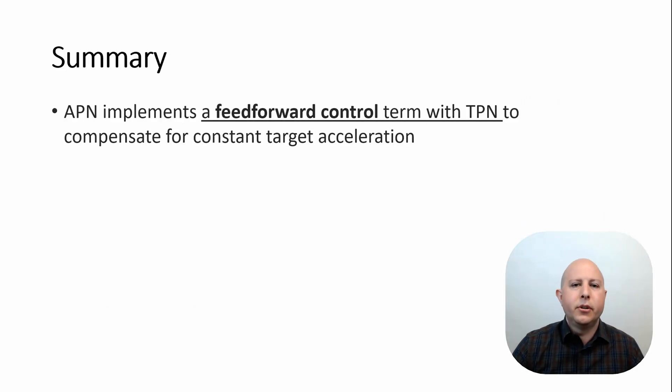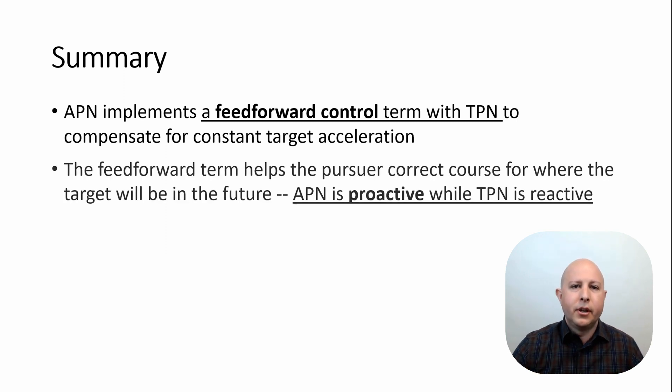So in summary, augmented proportional navigation implements a feedforward term in the homing loop to better correct for target acceleration. That feedforward term contained the target acceleration. It uses additional information about the engagement, and that's why it's useful. It assumes we know what the target's going to do, and it employs that against the target. In that sense, APN is proactive in that feedforward term, while true proportional navigation only is reactive. It's based off of feedback on what the target does.